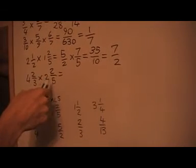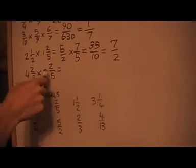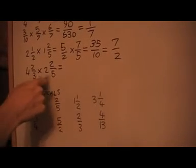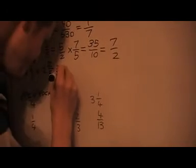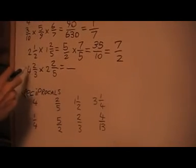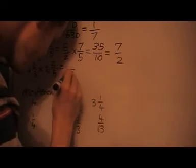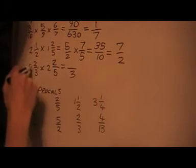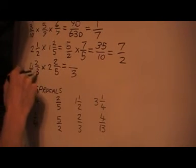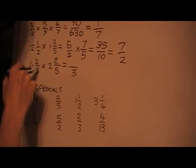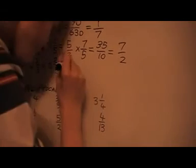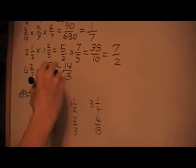And same with this bottom one here. We do the same thing. We just write them as improper fractions. And then we multiply. So I get 3. And then I do the method. 4 times 3, 12 plus the 2, 14. And next one here.